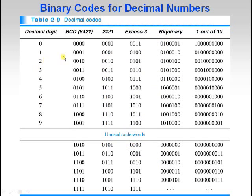Other BCD code forms include 8421, 2421, X3, biquinary, and 1-out-of-10 codes. We will see all these in later sessions. For the 2421 code, the weight of positions are 1, 2, 4, and 2 respectively. Adding the corresponding weights gives the decimal equivalent numbers.